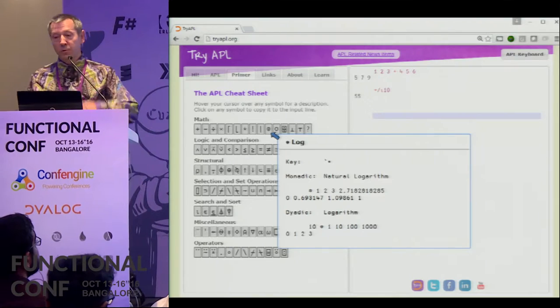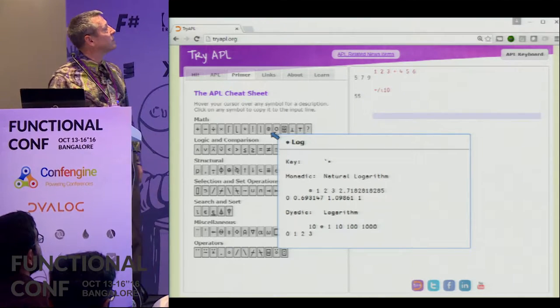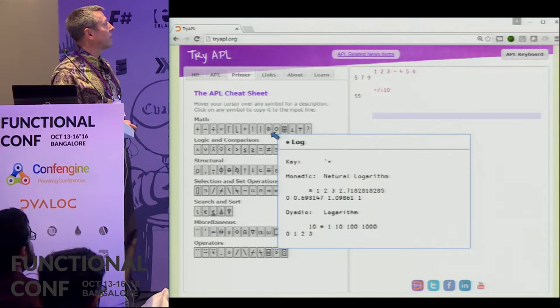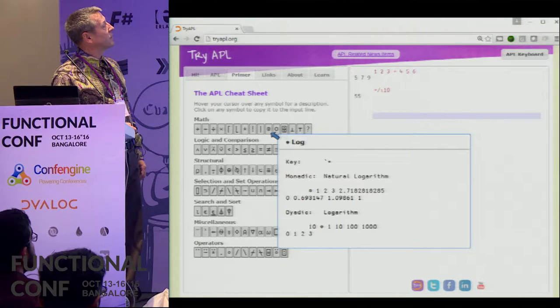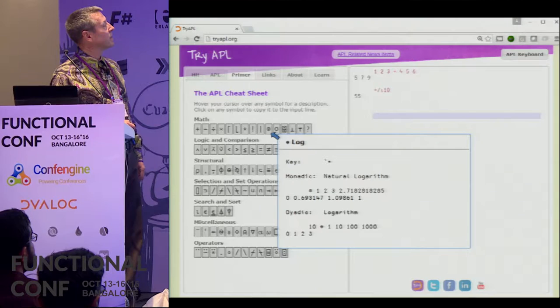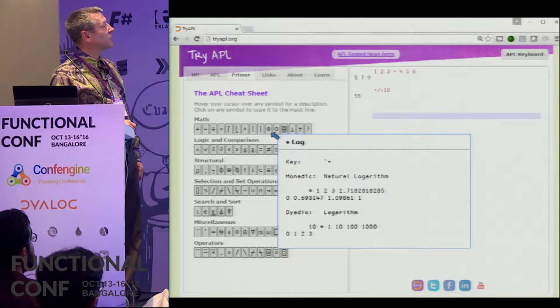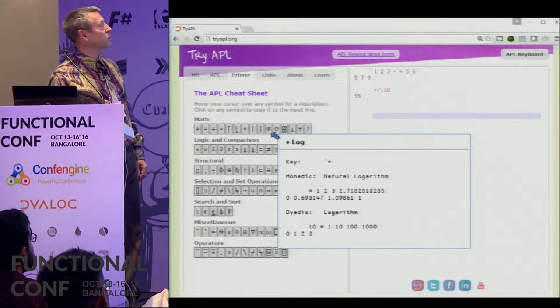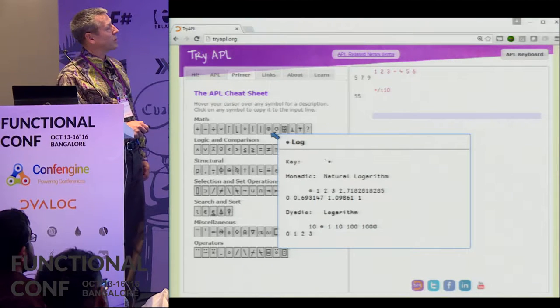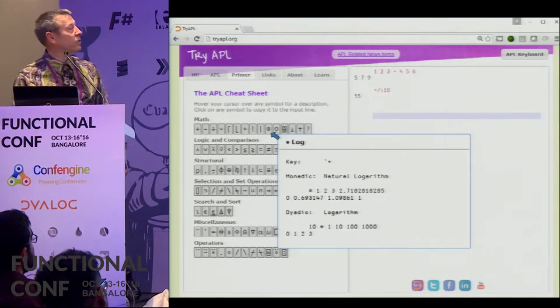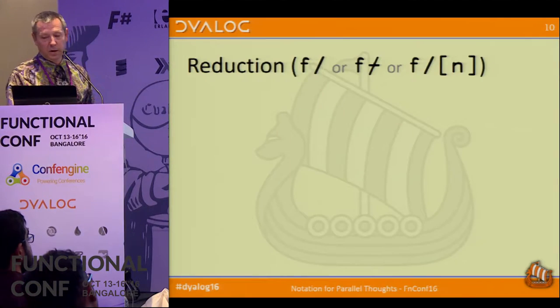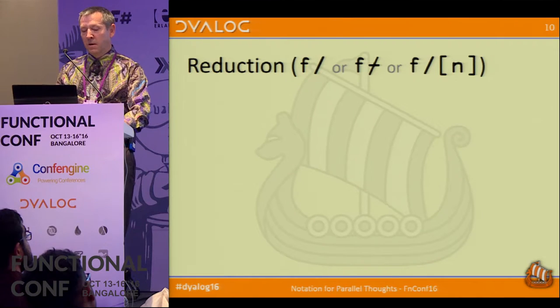So if you're curious about this, you might do this already. There's a site called try-APL.org, which is an online REPL. And if you go to the primer tab, there's a cheat sheet where you can hover over all these symbols, and you can see what they do. And you can type APL symbols. Even if you don't have a keyboard, you can click on this tab here and construct APL expressions.